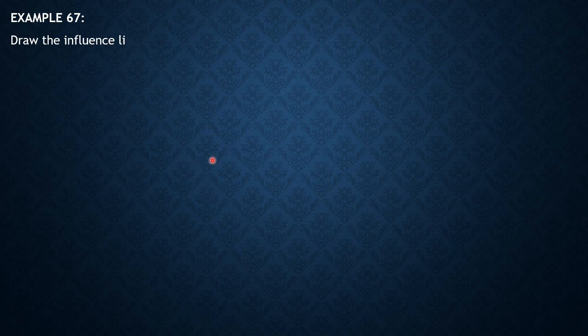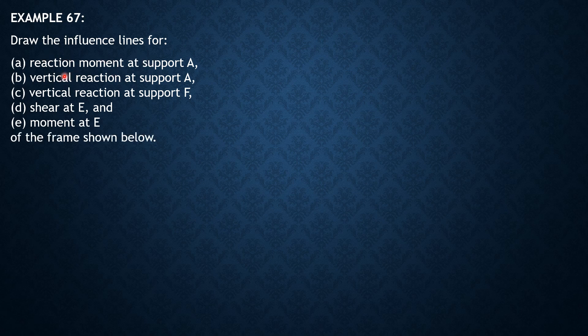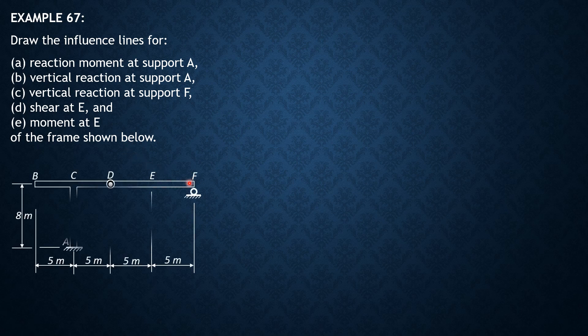Let's discuss the solution to example 67 on the construction of influence lines for a frame. Draw the influence lines for reaction moment at support A, vertical reaction at support A, vertical reaction at support F, shear at E, and moment at E of the frame shown.